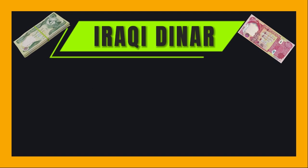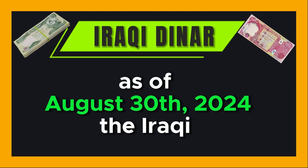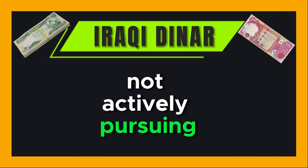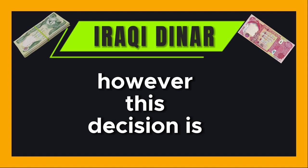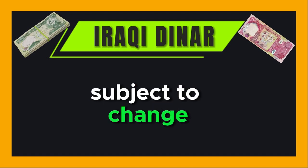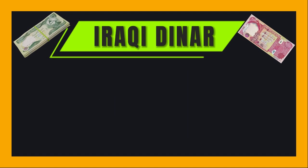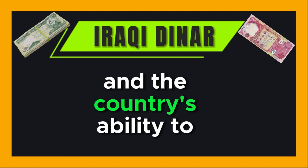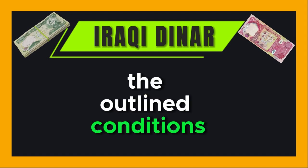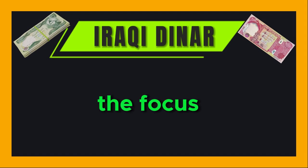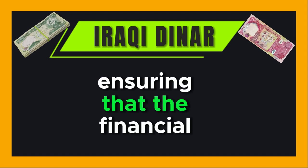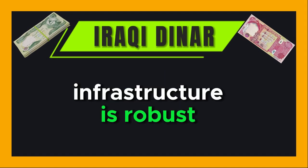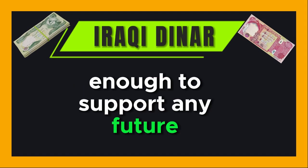As of August 30, 2024, the Iraqi government is not actively pursuing the removal of three zeros from the currency. However, this decision is subject to change based on the evolving economic landscape and the country's ability to meet the outlined conditions. The focus currently lies on strengthening economic fundamentals and ensuring that the financial infrastructure is robust enough to support any future reforms.